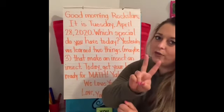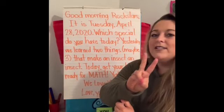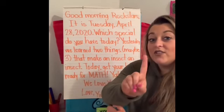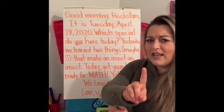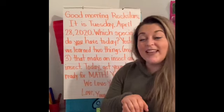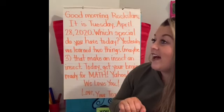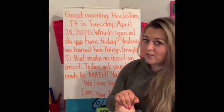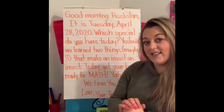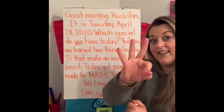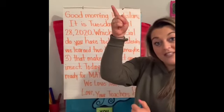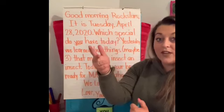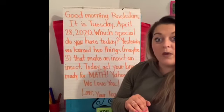Insects have to have a certain number of legs — how many? Six! That's right. The next thing they have to have is a certain number of body parts. Do you remember how many? Three! An insect has three body parts. They also have antennae to smell and see and feel their way around, and often they'll have wings as well. So that is very interesting.